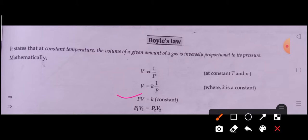For two given conditions, initial and final, we can write P1V1 = P2V2. By using this equation, we can find the value of an unknown quantity. For example, if we know P1, V1, and V2, then we can calculate P2.